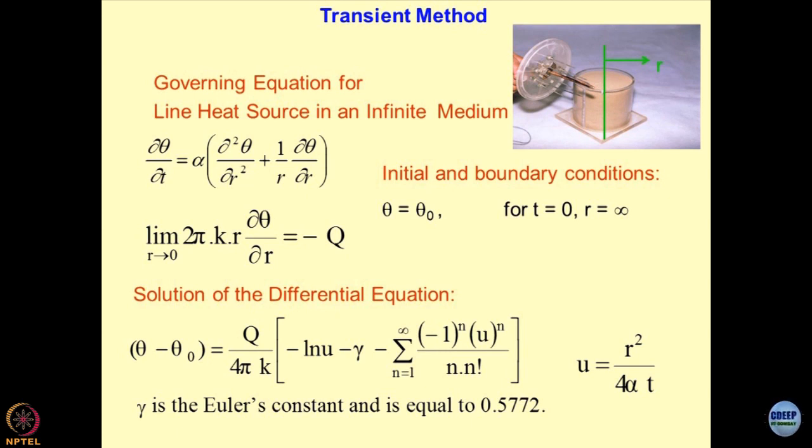We can substitute boundary conditions and get this expression. Q is the power supply, which is I squared into r, r is the resistance per unit length of the heater wire which has been fixed inside. If you solve this expression, this is the function which you get. I hope you remember this function is Euler's constant.